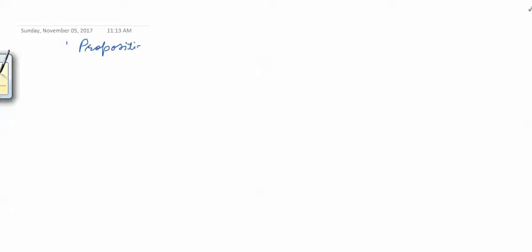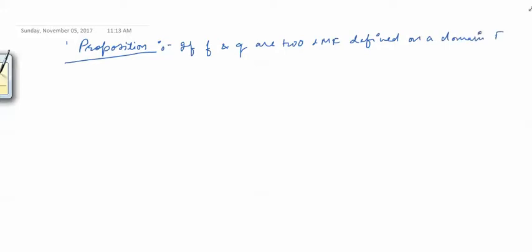In this video we will prove that division of two Lebesgue measurable functions, wherever defined, is also a Lebesgue measurable function. So what is the proposition? If f and g are two Lebesgue measurable functions defined on a domain E, then f divided by g, where g is not equal to 0 — meaning f/g is defined for all x for which g(x) ≠ 0 — is also a Lebesgue measurable function.